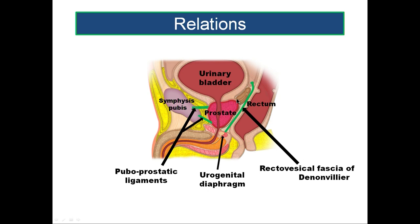The two are separated by a sulcus which will have the prostatic and vesical venous plexus communicating across it. Posteriorly, the prostate is related to the rectal ampulla — the dilated lower part of the rectum — and the prostate is separated from this rectal ampulla by a fascial sheath running downwards and forwards.